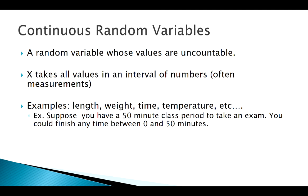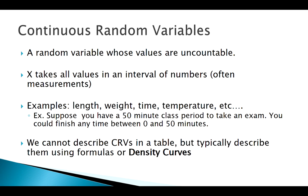For example, you have a certain class period to take an exam — say it's a 50-minute class period. You could potentially finish anywhere from zero to 50 minutes, and we can get an infinite amount of values between those two endpoints. So the key word with continuous random variables is 'uncountably infinite.' With discrete random variables we worked with tables, but we can't fit an infinite amount of things in a table.